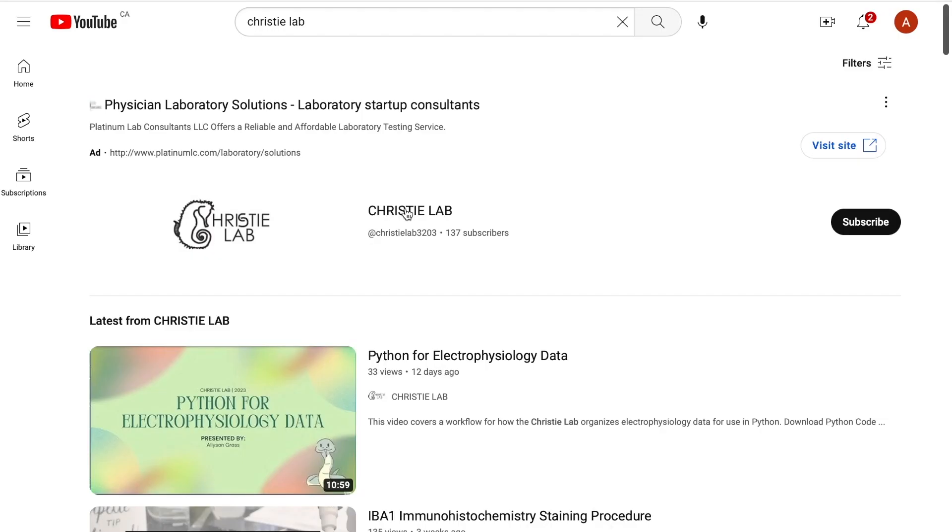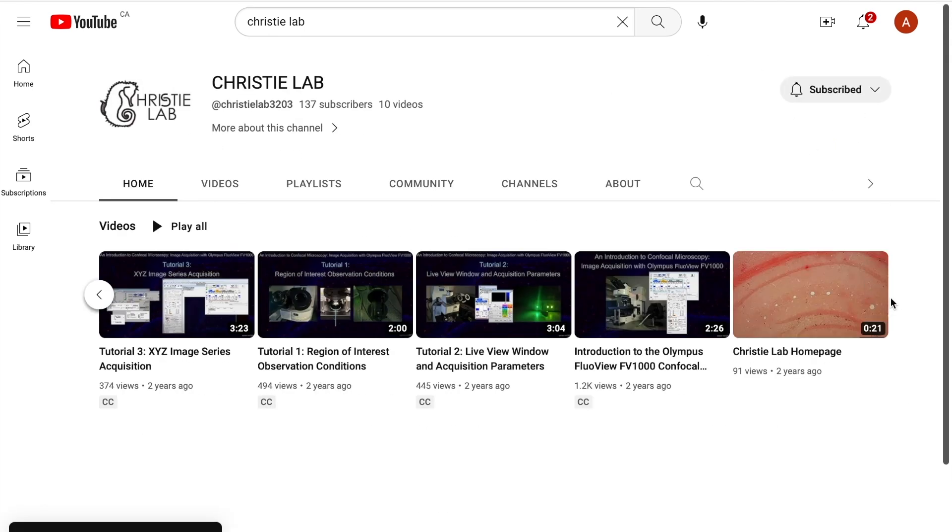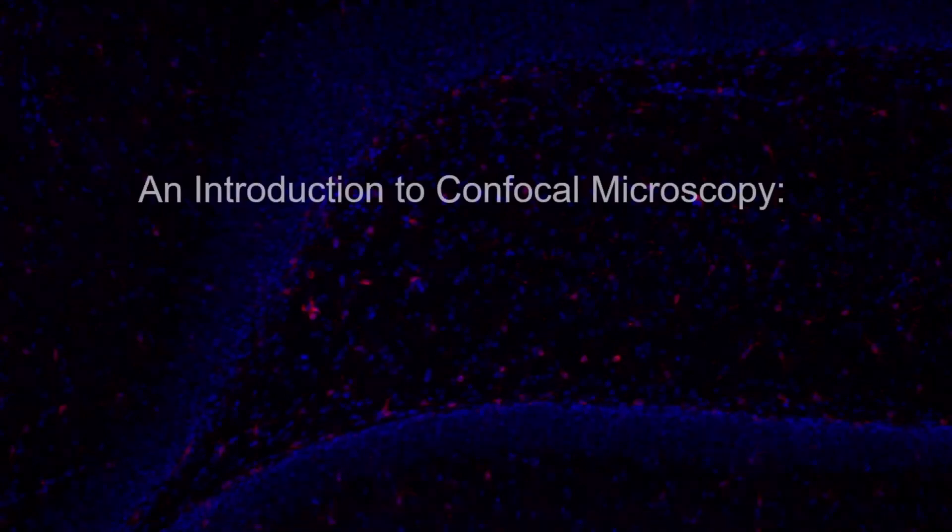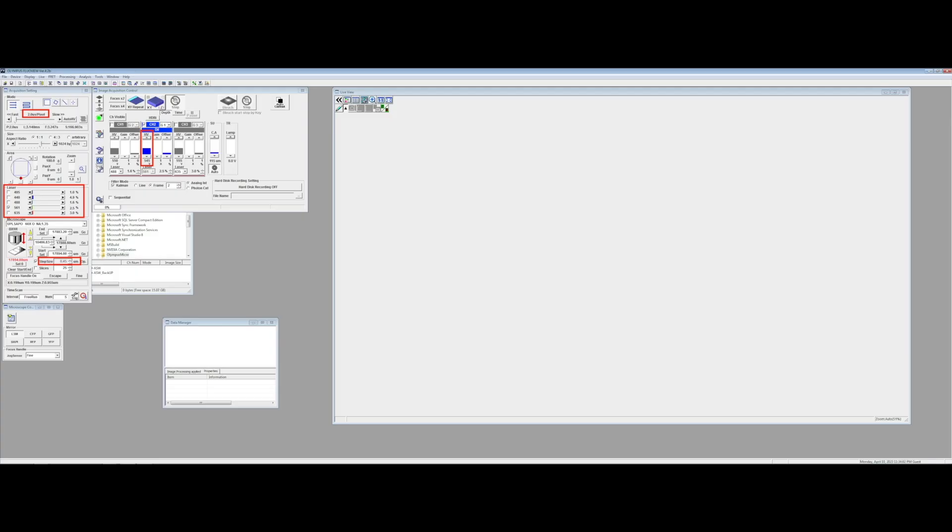For a more comprehensive review of the imaging software used here, see our lab's tutorial series on using Olympus Flowview FV1000. The parameters we are using are as follows: Set step size to 0.45 micrometers, as it needs to be small to capture spines. Set scanning rate to 2 microseconds per pixel. Keep HV within the range of 525 to 650, and keep the laser power under 10%.